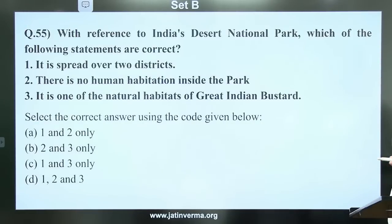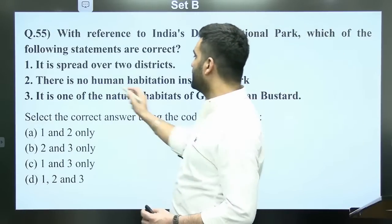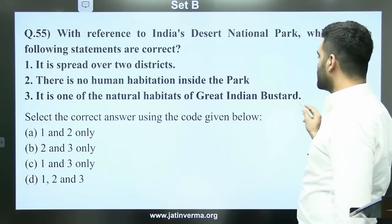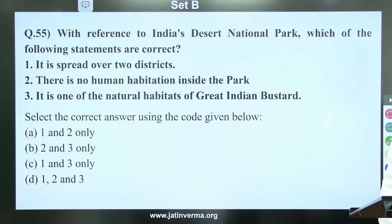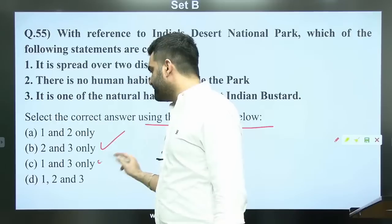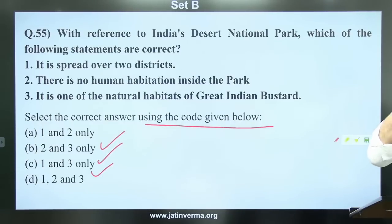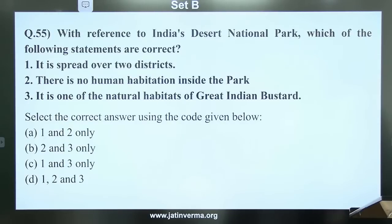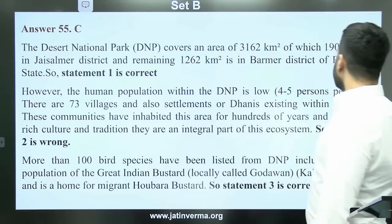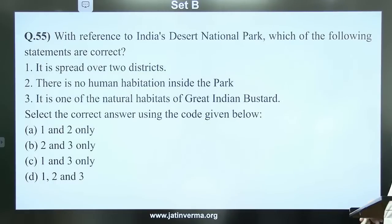Question 55: With reference to India's Desert National Park — it is spread over two districts; there is no human habitation inside the park; it is one of the natural habitats of the Great Indian Bustard. The answer is C — statements 1 and 3 only. The Desert National Park covers an area of 3,162 square kilometers. The second statement is wrong as human population within the DNP, though low, does exist.